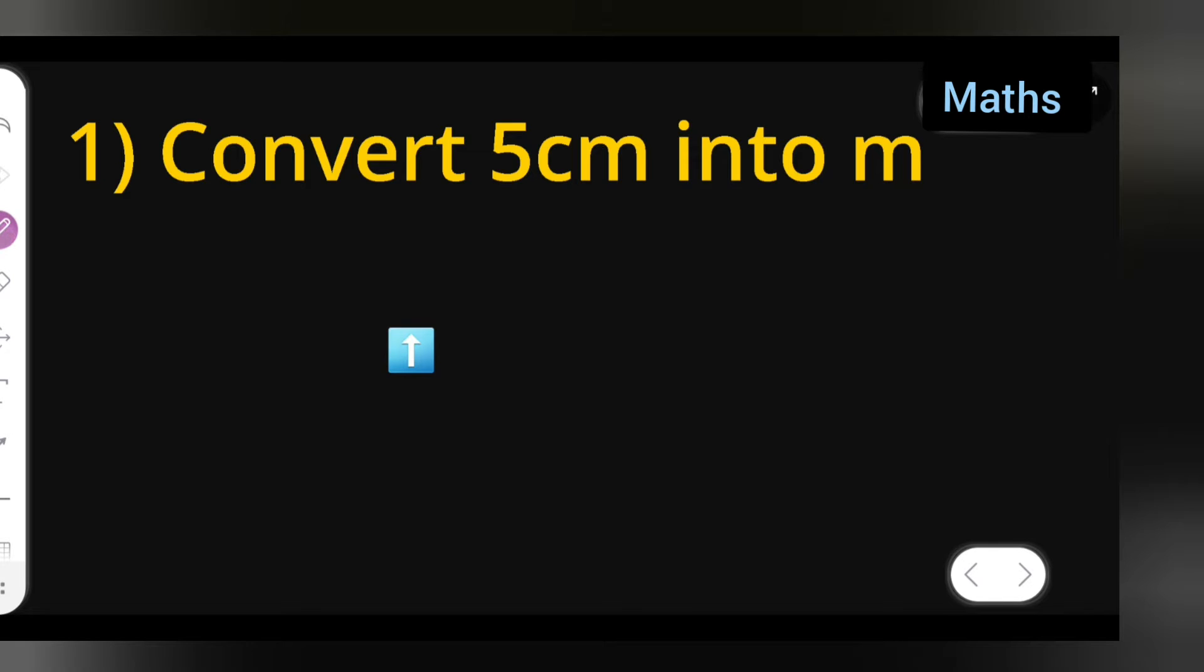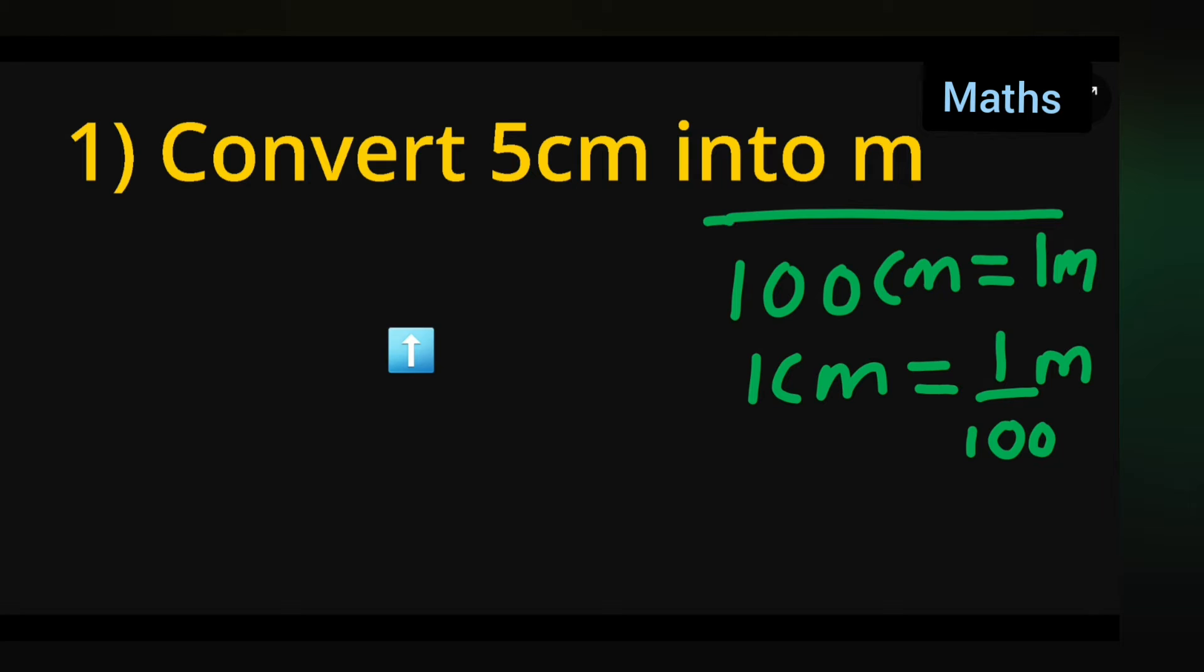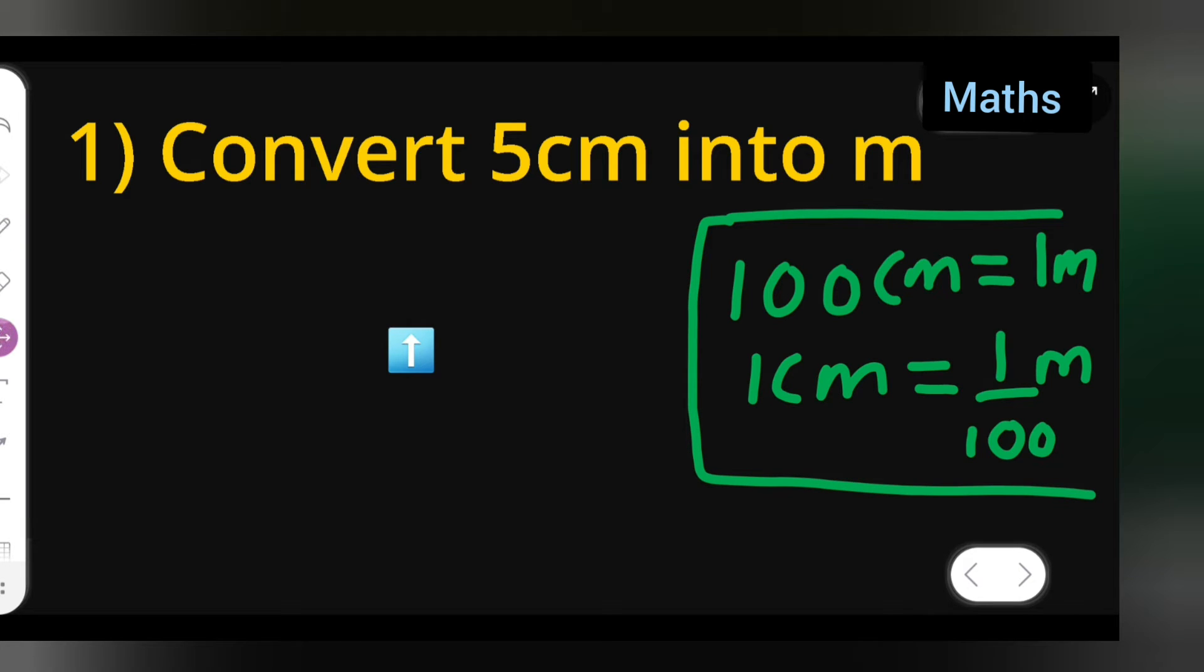First thing you're going to do is write a conversion: 100 centimeters is equal to 1 meter. Now, 1 centimeter is equal to 1 upon 100 meter. Remember this conversion. This is important knowledge you need to know, so 1 centimeter will be 1 upon 100 meter.